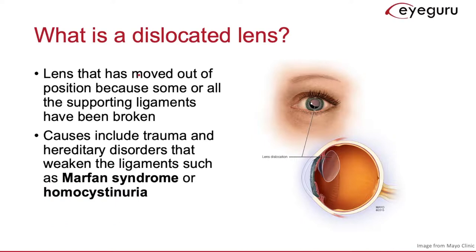A dislocated lens is simply a lens that has been moved out of position because some or all of the supporting ligaments or zonules have been broken. Reasons that these zonules can be broken include either trauma or diseases that weaken ligaments, such as Marfan syndrome and homocystinuria.